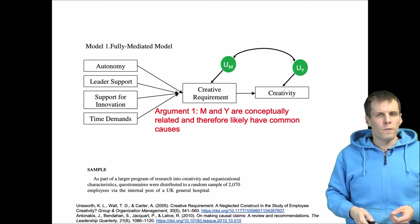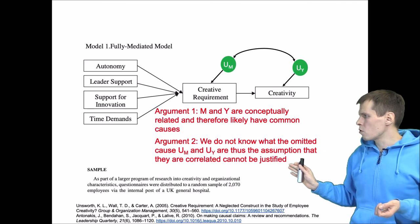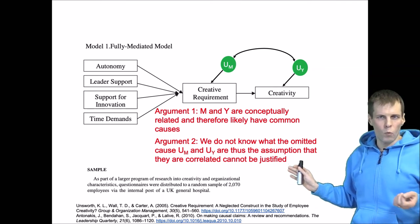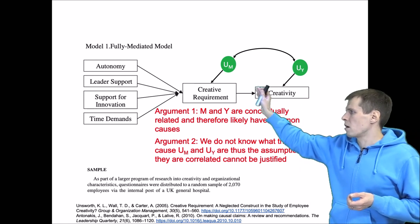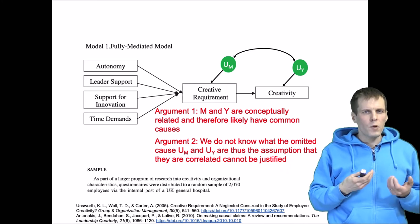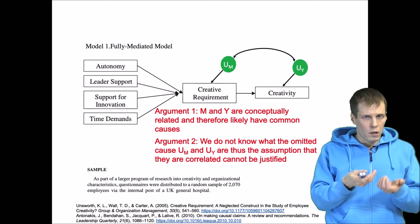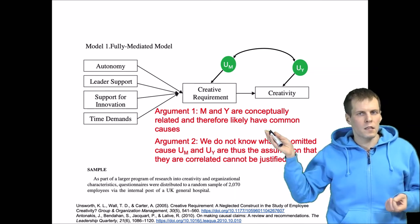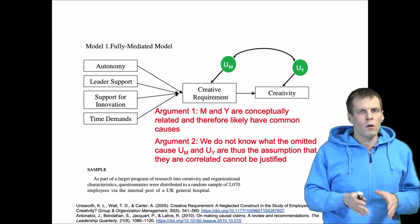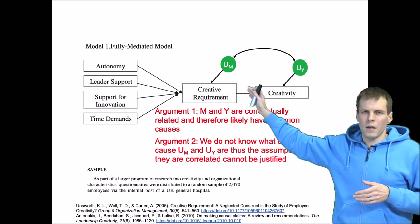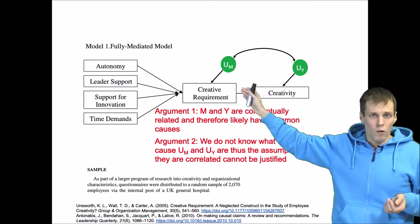Another argument for including this correlation is that we don't know what the omitted causes of U_M and U_Y are, and thus we cannot justify the assumption that they are uncorrelated. We cannot even in principle know what all the causes of creativity are. If we knew all the causes of creativity, then this study of whether creative requirement causes creativity would not even be needed. If we don't know what these omitted causes are, then how could we possibly make or justify the assumption that they are uncorrelated?